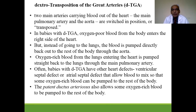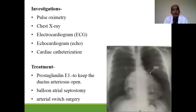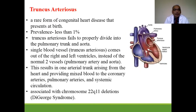In dextro-transposition, there is complete switching of the circulation — the aorta arises from the right side and the pulmonary artery from the left. Investigations include pulse oximetry, chest X-ray, ECG, and echocardiography. Treatment: the main aim is keeping the foramen ovale open using prostaglandin E1; balloon atrial septostomy and arterial switch surgery are the ultimate treatment.